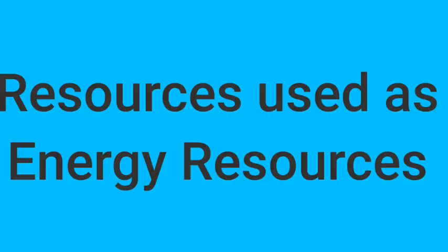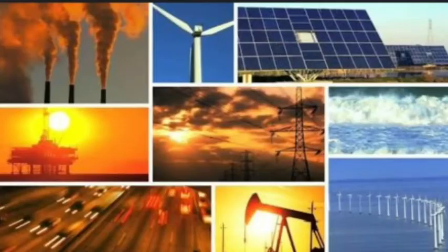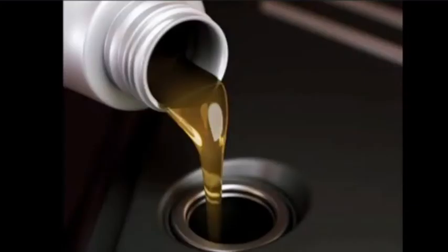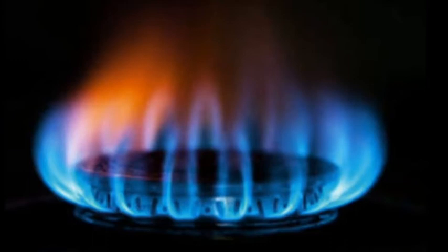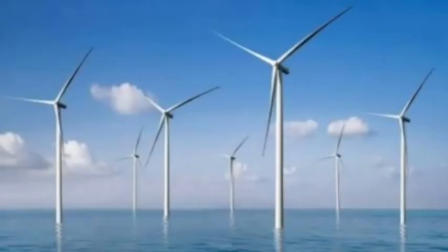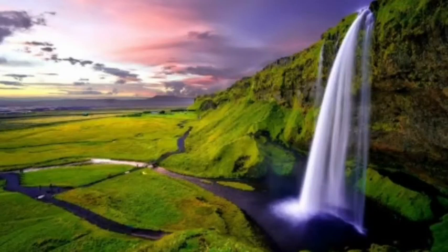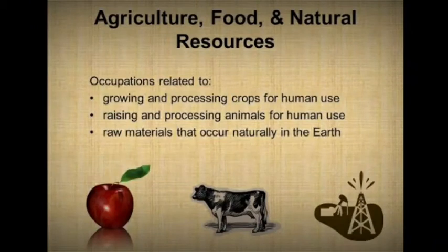Now let's see how resources can be used as energy resources. We get many elements from nature which are used for producing energy. Energy can be generated from elements of nature like coal, petroleum, natural gas, etc. We also produce energy from wind, waves, sunlight, waterfalls, etc. Thus we can conclude that resources can be used as food, as source of raw material, and as energy resources.